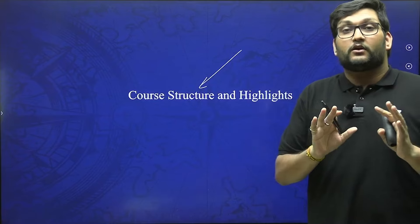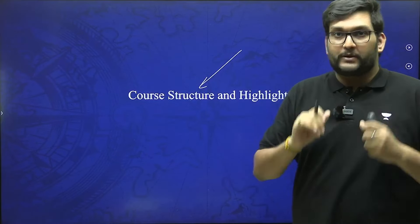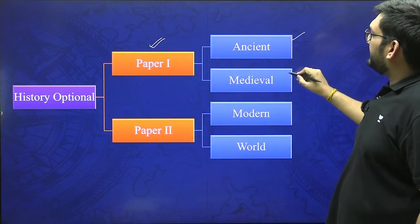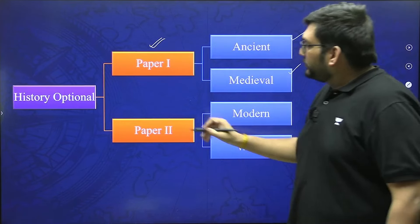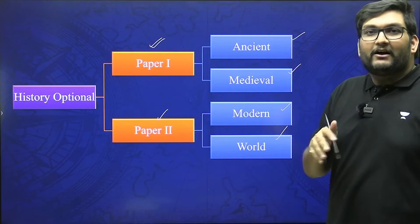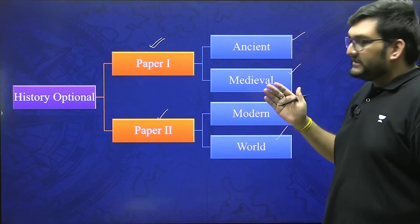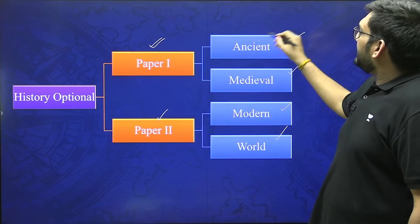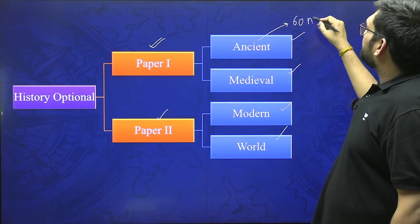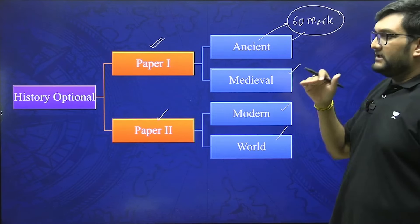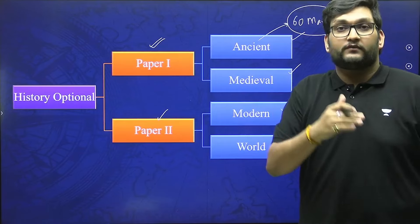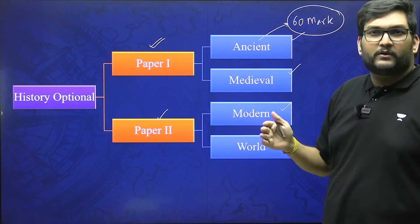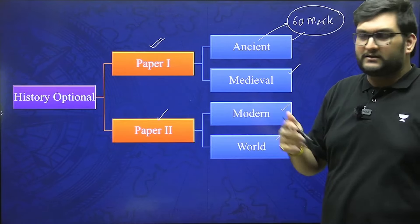When we talk about the course structure, we need to understand the structure of history as an optional because there are two papers. In Paper 1 we have ancient and medieval, and in Paper 2 we have modern and world history. All of these topics intersect with GS, and that is the beauty of history optional. In the ancient portion, we have 60 marks straight for a section called mapping — one of the most objective portions — and thereafter you get subjective questions ranging between 150 to 300 words.